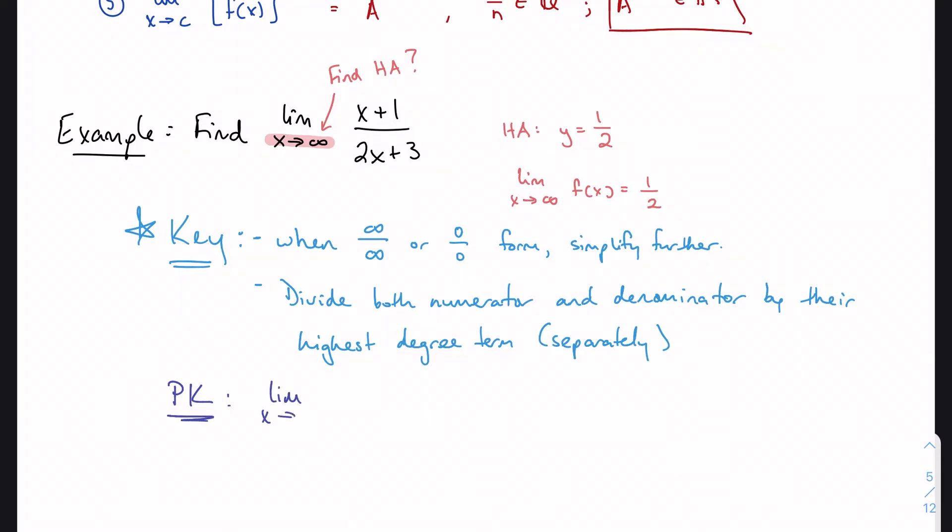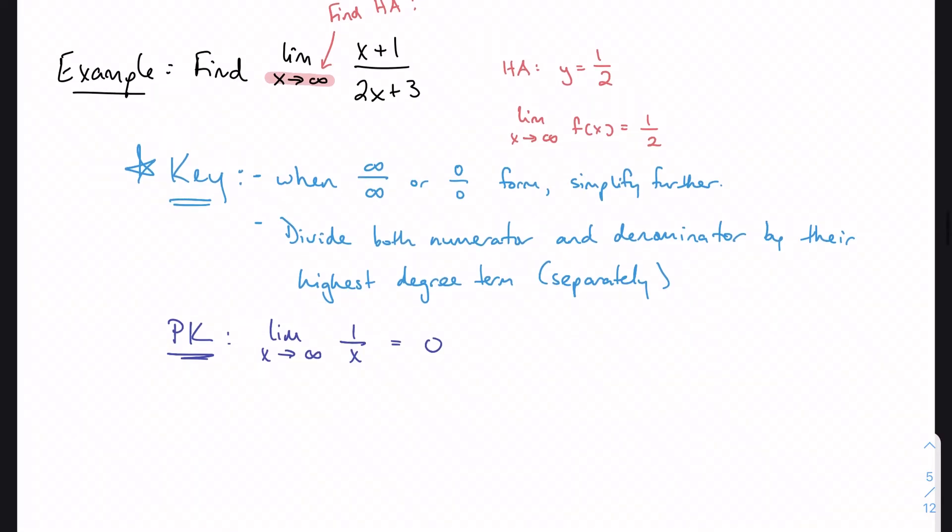is that the limit as x approaches infinity of 1/x is zero. As x gets bigger and bigger and bigger, 1/x is going to get smaller and smaller and smaller, and it's going to approach zero.